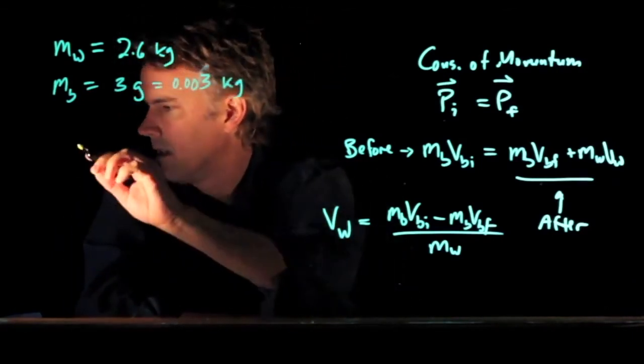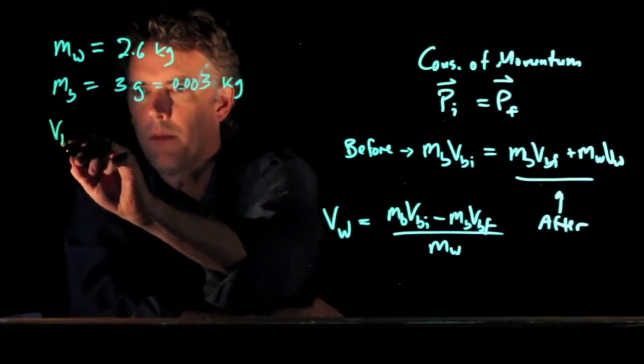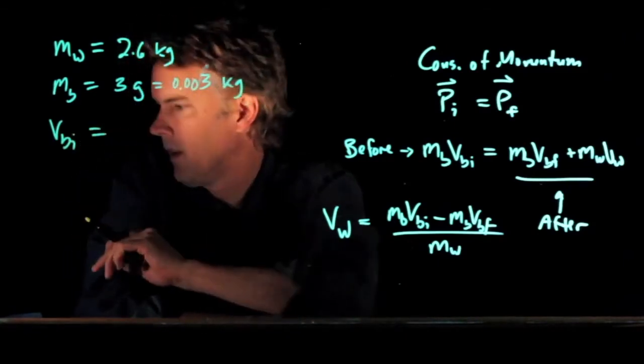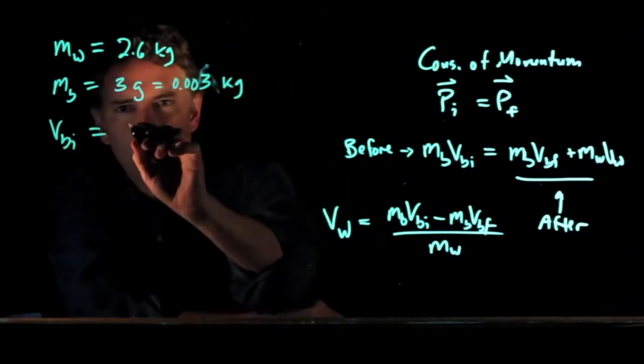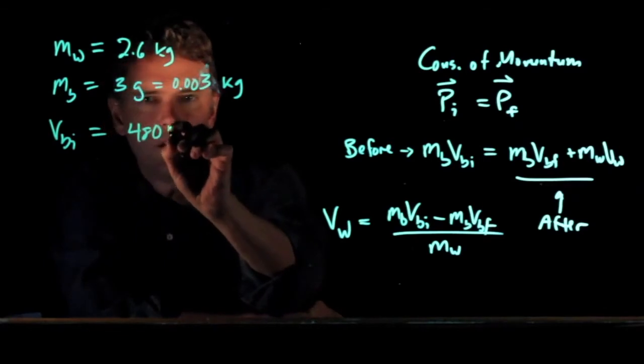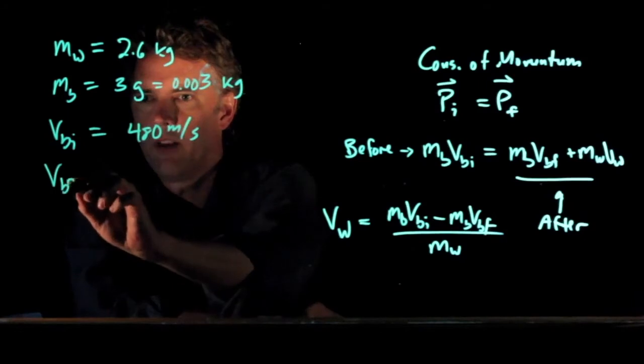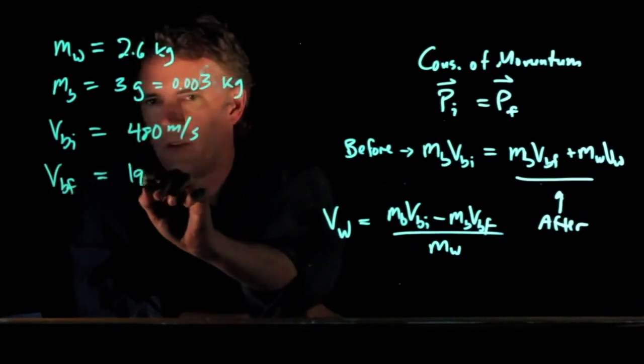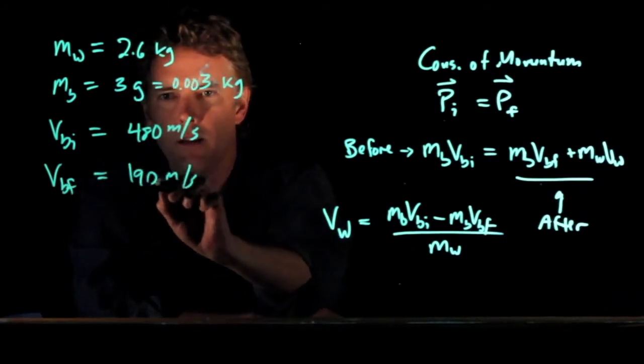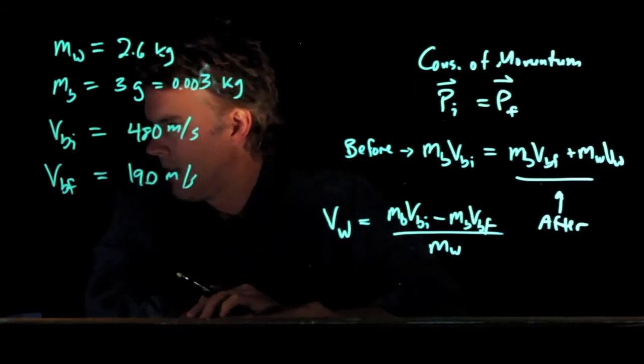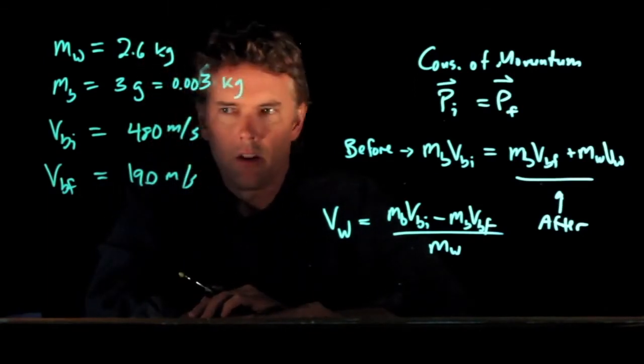We've got the speed of the bullet initially, which was 480 meters per second. The speed of the bullet finally, which is 190 meters per second. And I believe that's all of our information.